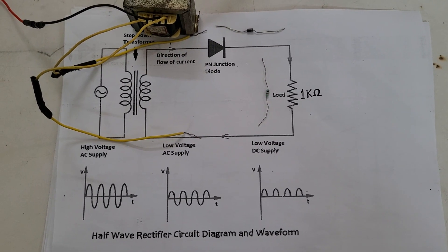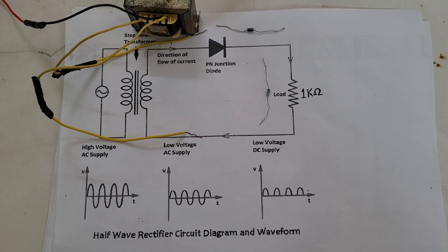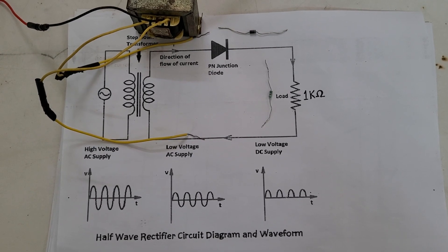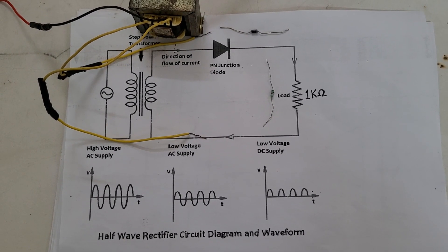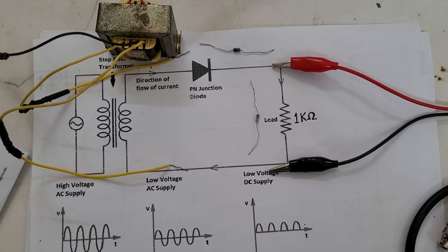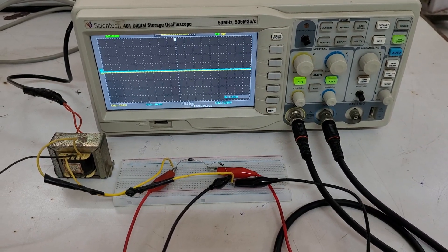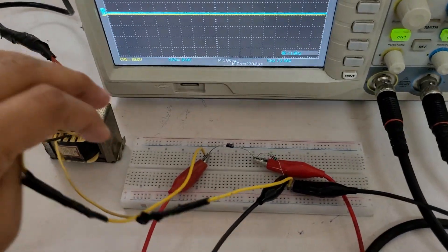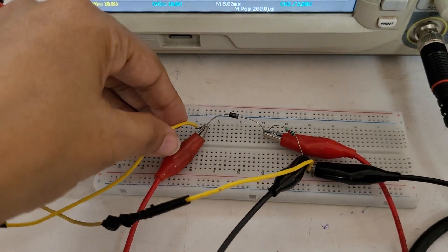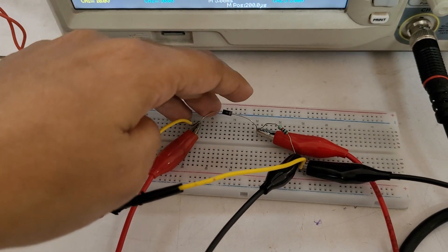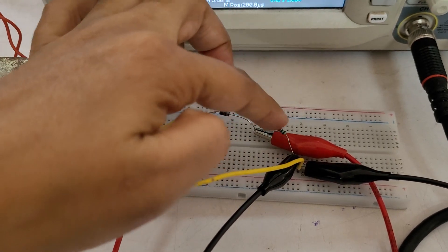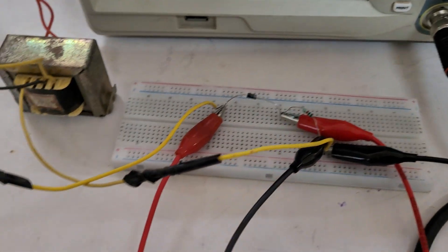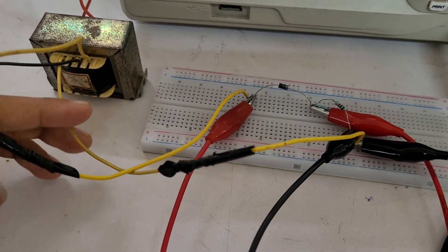We need a diode which is going to be connected in the forward direction. A diode allows electric current in one direction, and this unique property allows it to act like a rectifier. We are going to measure the output across our circuit, which is made on the breadboard. The transformer is connected to the positive terminal of the diode, and the negative terminal of the diode is connected to one terminal of the resistor. The other terminal of the resistor is connected to the other end of the transformer.